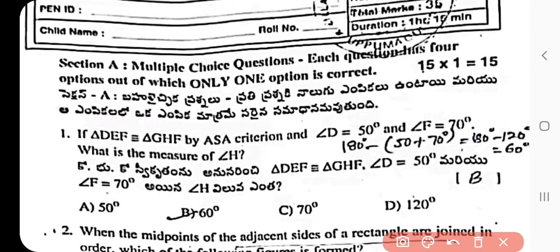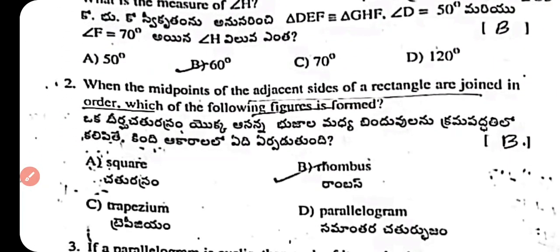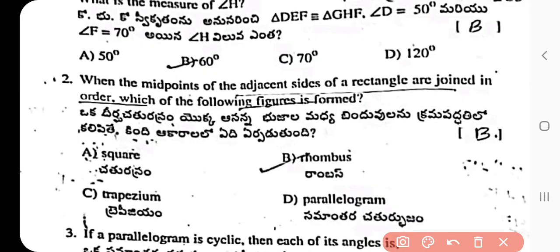Question 2: When the midpoints of adjacent sides of a rectangle are joined in order, which figure is formed — square, rhombus, trapezium, or parallelogram? The answer is B: rhombus. When midpoints of adjacent sides of a rectangle are joined, the resulting figure has equal sides of half the length of the rectangle's diagonal, forming a rhombus.